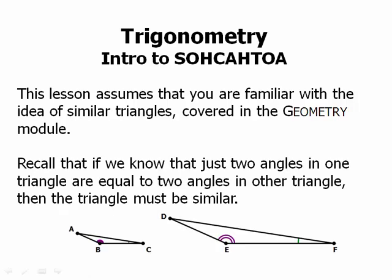Recall that if we know just two angles in one triangle are equal to two angles in the other triangle, then the two triangles must be similar. And that means that they have the same basic shape—one is just a scaled up or a scaled down version of the other. All three angles are the same and it's the same basic shape.